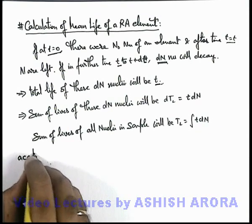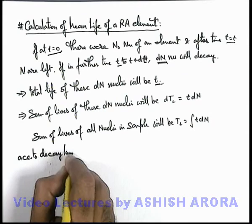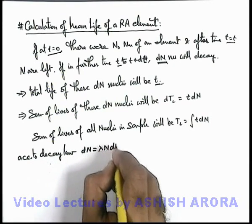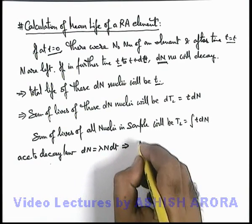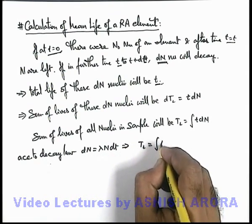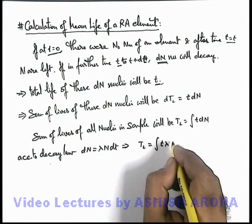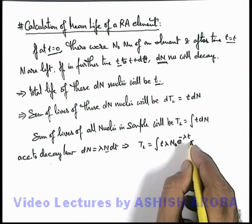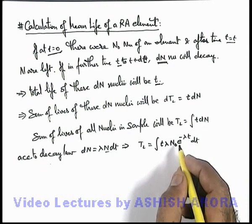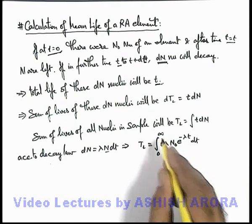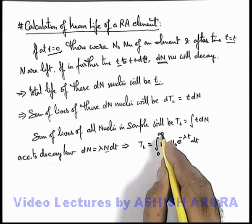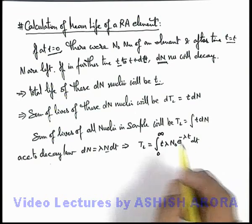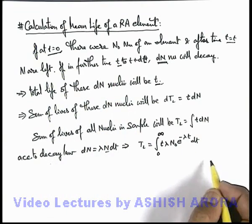So the sum of lives of all nuclei in the sample will be the total life written as integration of dT_L, that is t·dN. According to the decay law, we use dN equals lambda·N·dt. This implies the total life is the integration of t·lambda·N·dt, and N we can write as N₀·e to the power minus lambda·t, integrated from zero to infinity, as the whole sample will be consumed up to infinity when all N₀ nuclei transform from parent to daughter state.